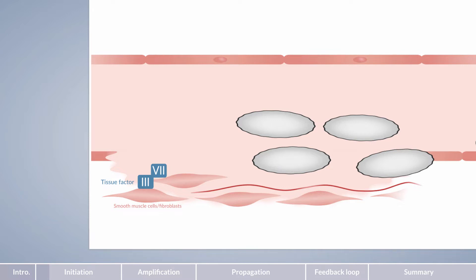The complex of factor III and activated factor VII then activates factor X. Subsequently, factor X cleaves factor II, also called prothrombin, to factor IIa, also called thrombin.